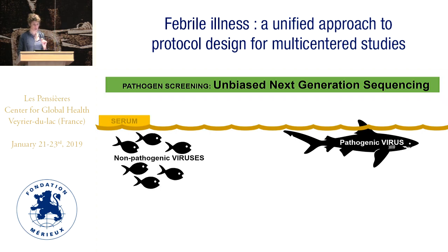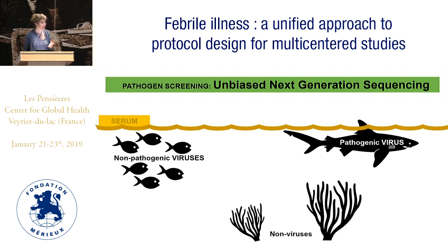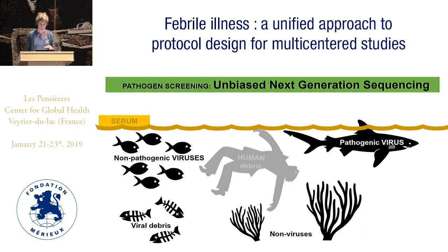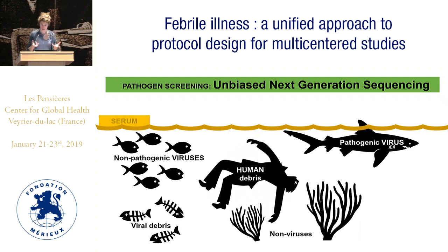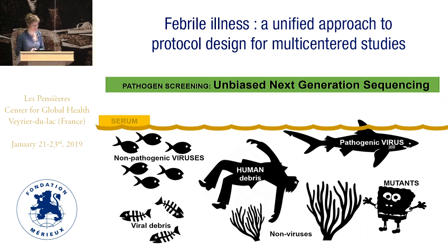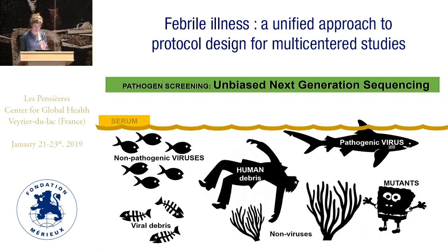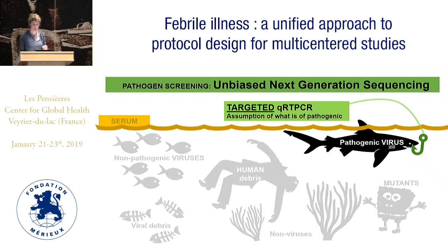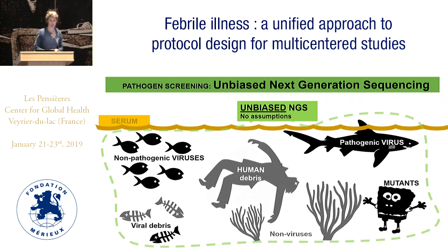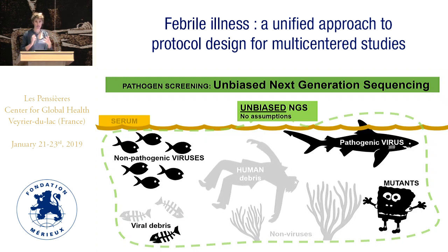Usually what we do is look for known viruses. But there are also other viruses we don't even know could be pathogenic. With unbiased next-generation sequencing, we have no assumption — we look for everything. The challenge is that what we detect mostly is human DNA and debris we don't care about. We have to do extensive cleaning and sample preparation to find new viruses, mutants, or even debris that could help us know what the patient has.